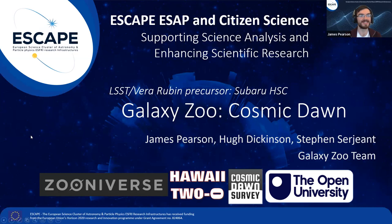Through the support of ESCAPE, I, along with Hugh Dickinson and Stephen Sergent at the Open University, along with the Galaxy Zoo team, have been working on a new iteration of Galaxy Zoo called Galaxy Zoo Cosmic Dawn. As Stephen said, this is a precursor for LSST Rubin. It is the latest iteration of Galaxy Zoo, which is the longest-running and most popular project on the Zooniverse citizen science platform.